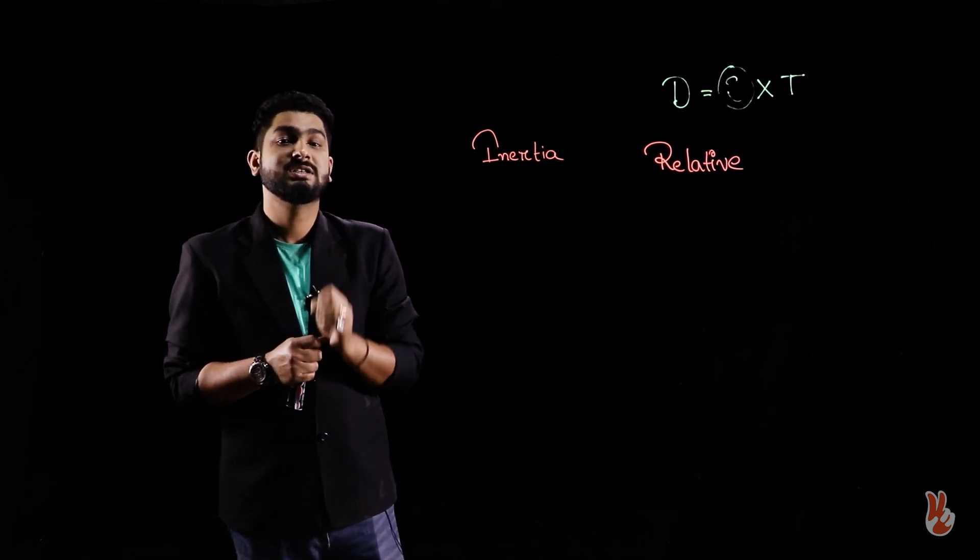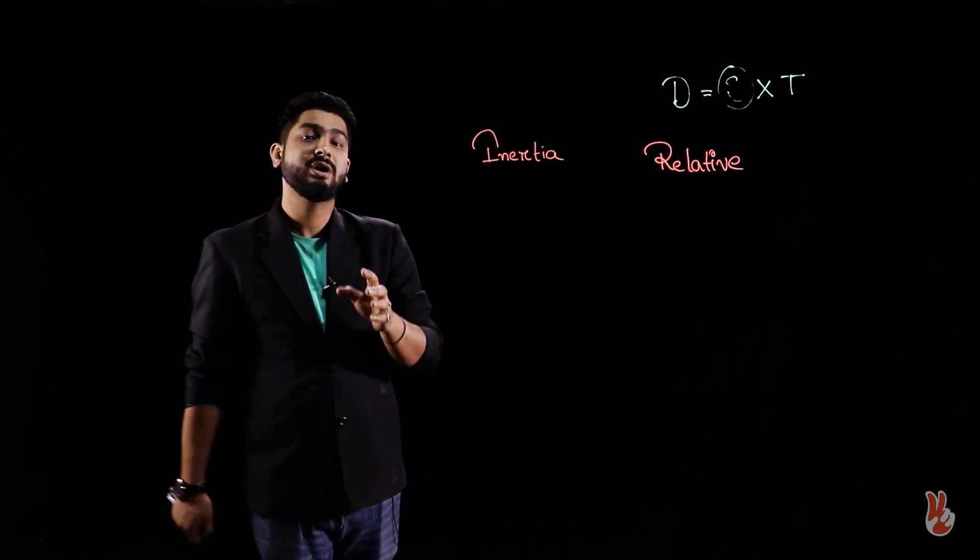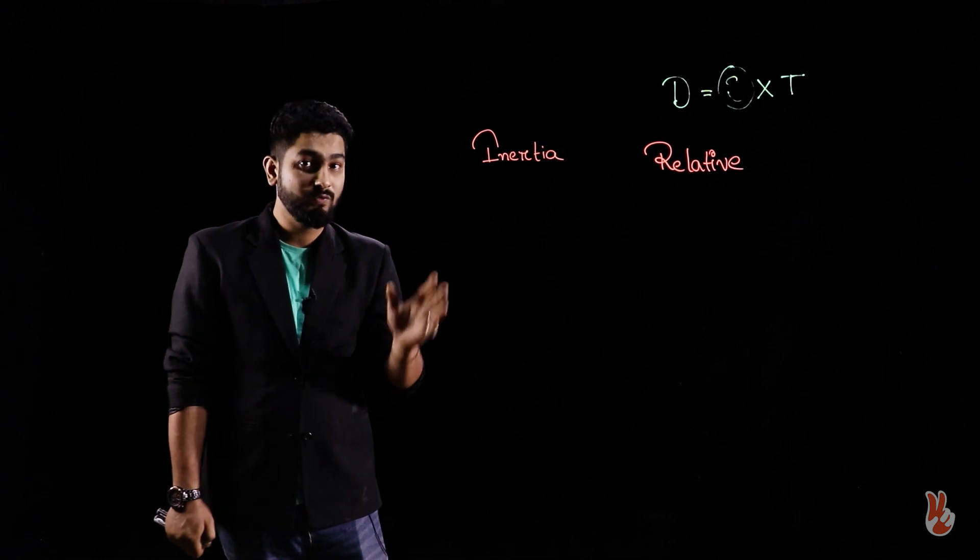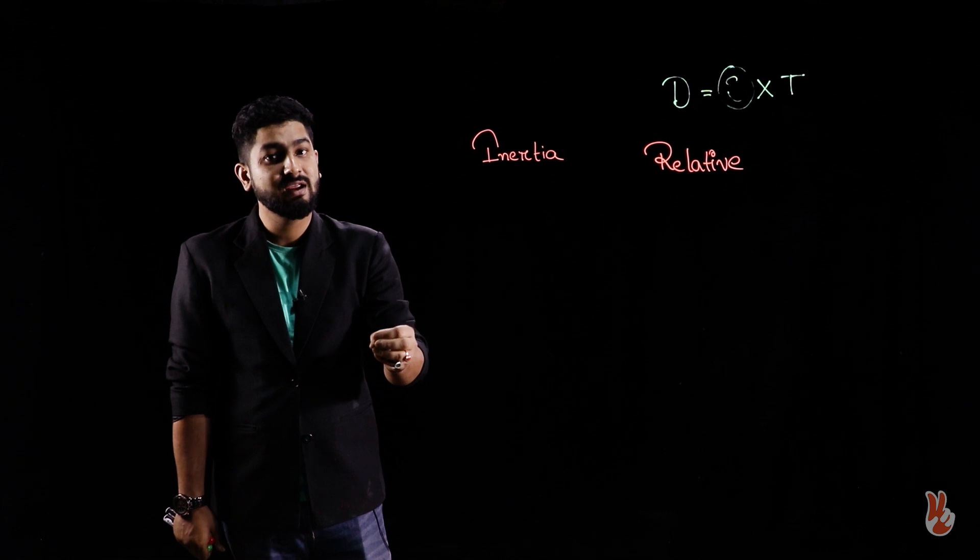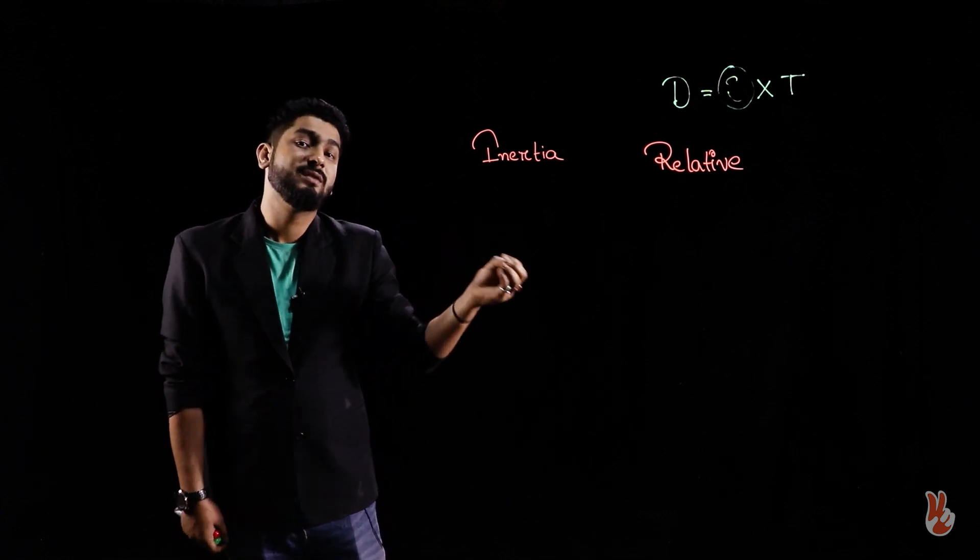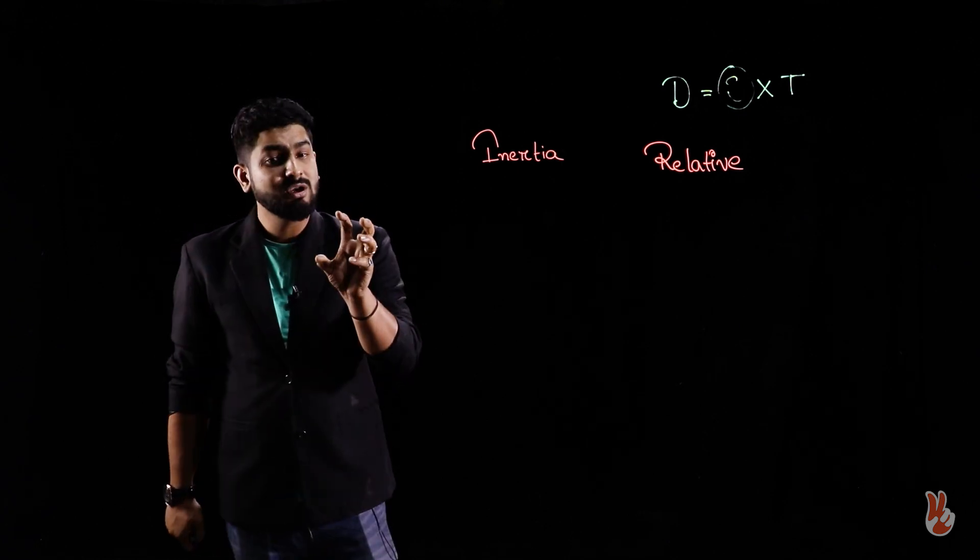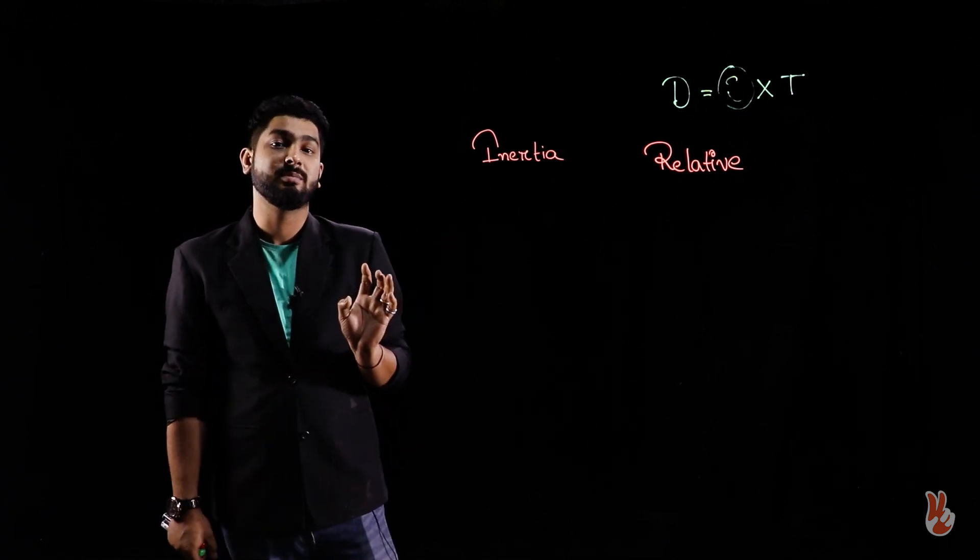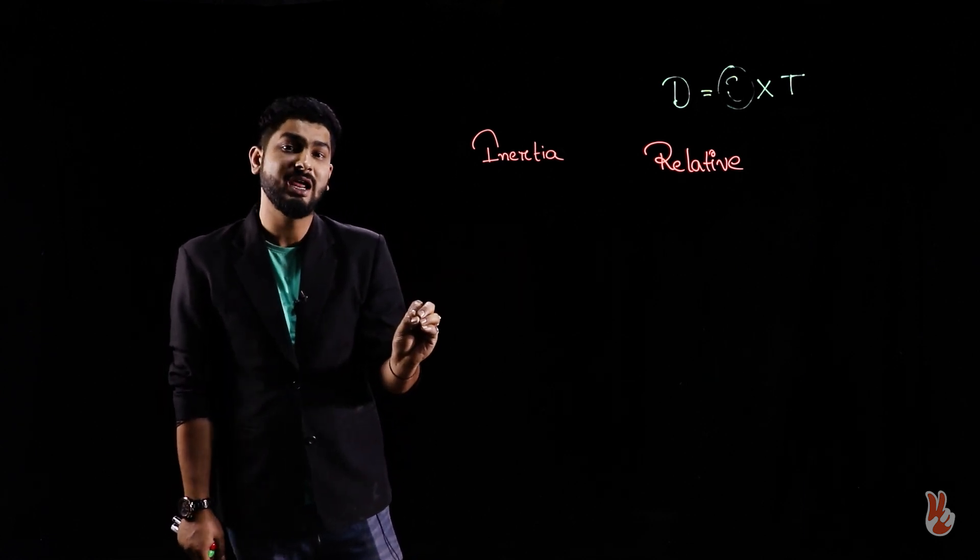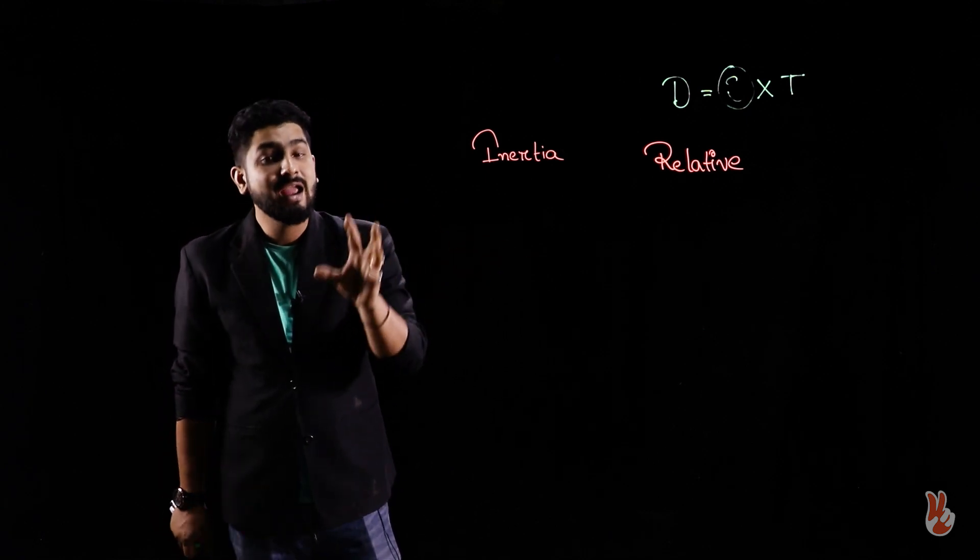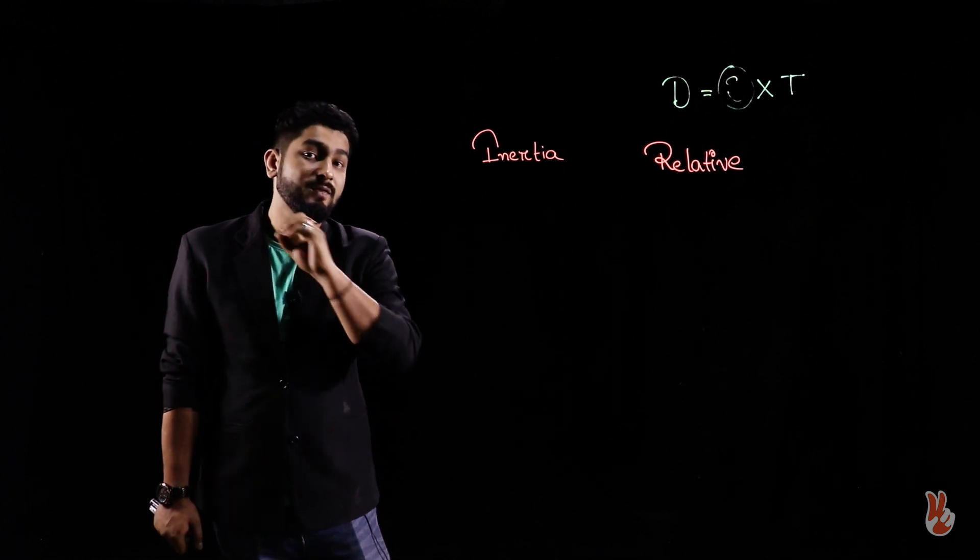Inertia is a state of object in which the body tends to move if he is moving, and if it is at rest he will constantly be in rest, irrespective of the other factors. Let me reframe. For example, a ball is there who's moving at a speed of 10 kilometer per hour. And if he is moving, he will constantly go on moving, he will not stop throughout his life. And if a ball is at rest, he will not move irrespective of whatever happens. That is state of inertia.